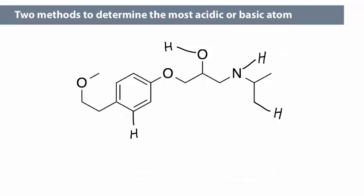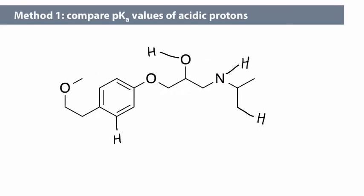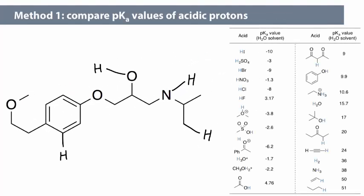We can use method 1 or method 2 to identify the most acidic proton. To use the pKa method, method 1, we look up the pKa value of each functional group in a pKa table. What is the pKa value of each of the indicated protons?